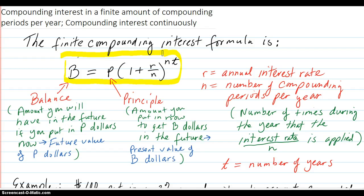B is the balance. That's the amount you will have in the future if you put in P dollars now. Also called the future value of P dollars.